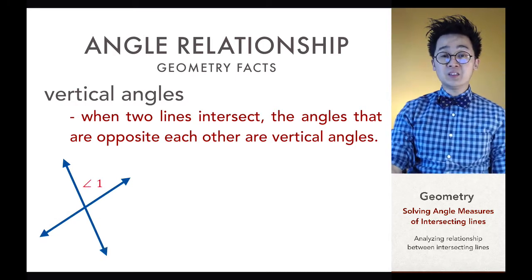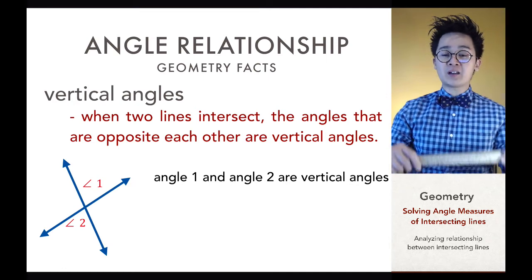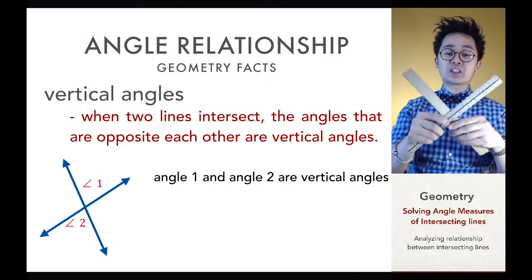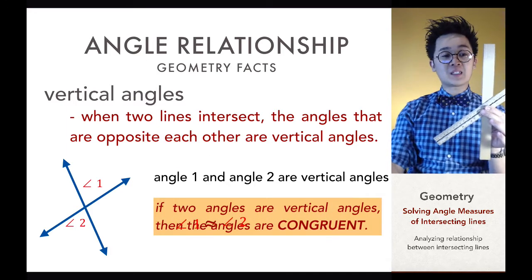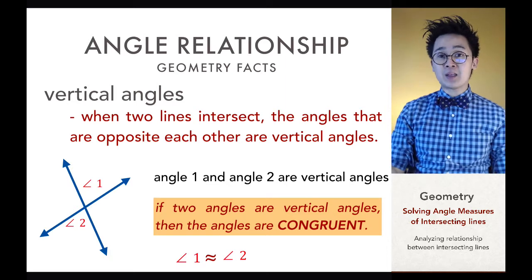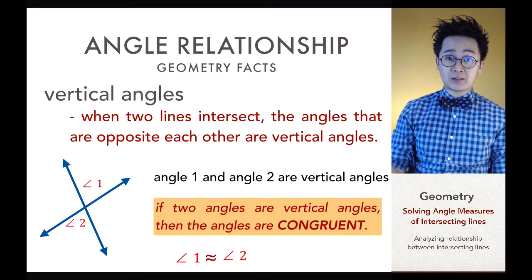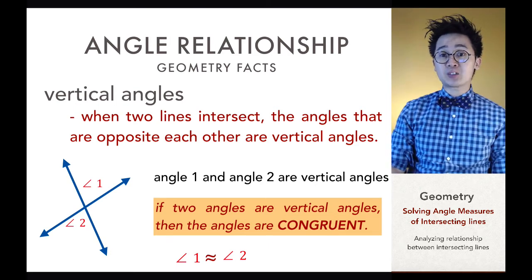Angle one and angle two are vertical angles because they are opposite each other. The key property to remember is that vertical angles are congruent to each other — meaning angle one is congruent to angle two, and congruent means same angle measurement and same size. The congruent symbol is used frequently in geometry to describe equal or same-sized geometric figures.